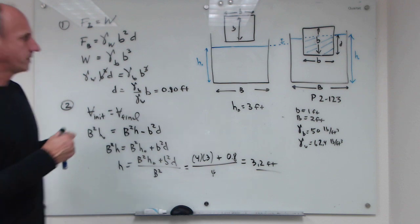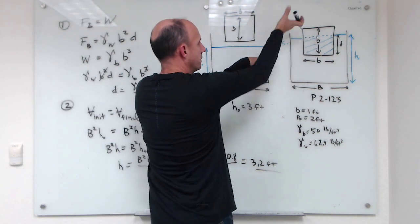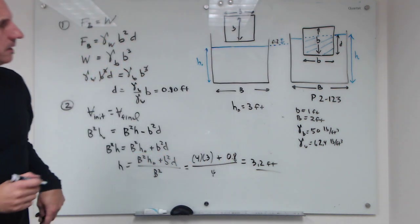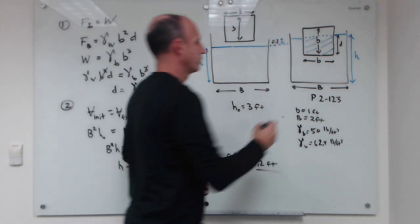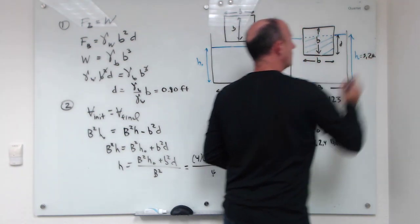Okay, so initially we're at 3 feet. By the time the block comes in, displaces some liquid and pushes it up, it comes up an amount of 0.2 feet compared to what was previously, so it works out to be 3.2 feet.